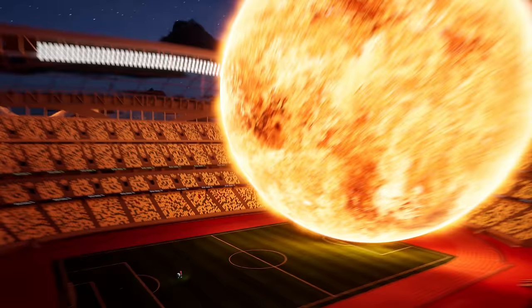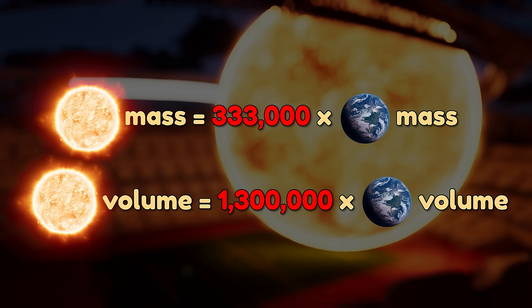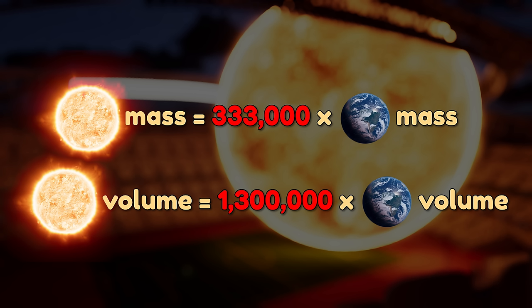Here is a scale model of our Sun and Earth in a stadium. The Sun is huge! It weighs about 333,000 times as much as the Earth, and you could fit around 1.3 million Earths inside of it.